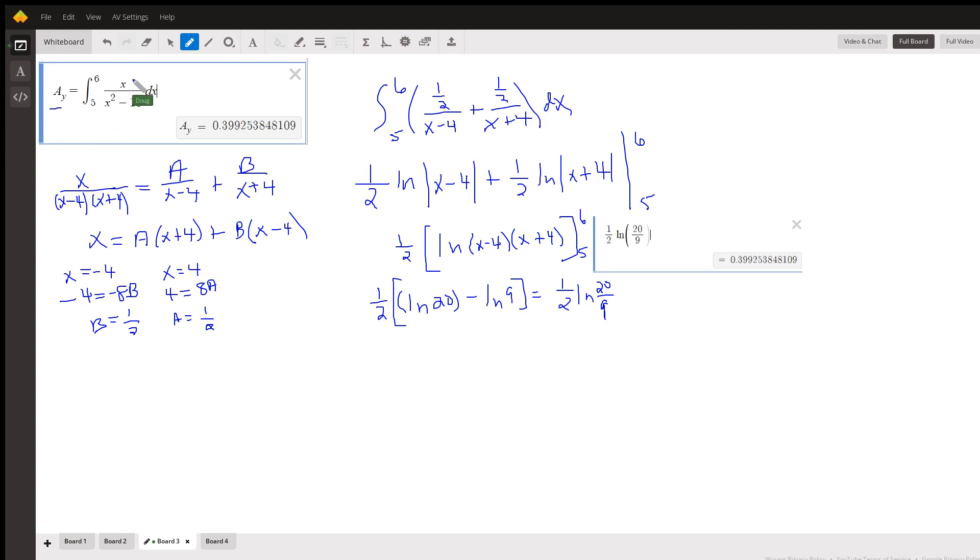We have to take x times f of x. So we still have, well I used partial fraction decomposition, but now I realize you know what, you could have used u substitution. u equals x squared minus 16, du equals 2x dx. Put a 2 here and a 1/2 out front.